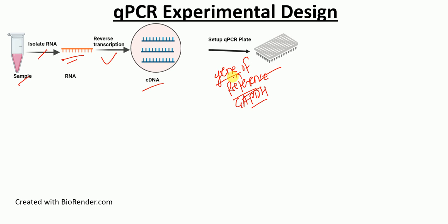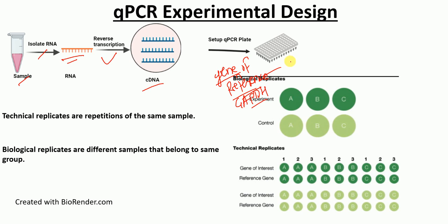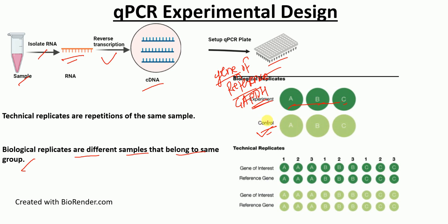So how are you going to set up your QPCR plate? You prepare the master mix using these specific primers, and then you put your master mix into the different wells. You will have your experimental sample and the control sample. Your experimental sample must have at least three biological replicates. Biological replicates are the different samples that belong to the same group — for example, three samples that have all received the same treatment. We also have three biological replicates for the control group, which have not received any treatment.